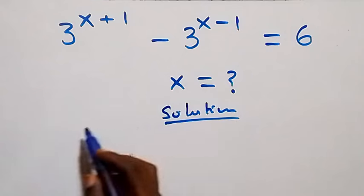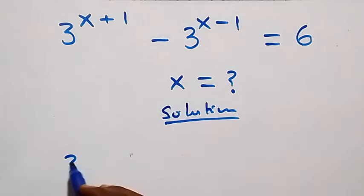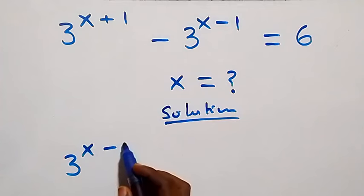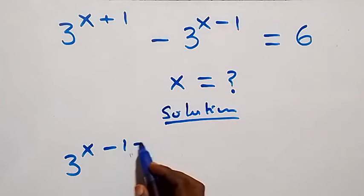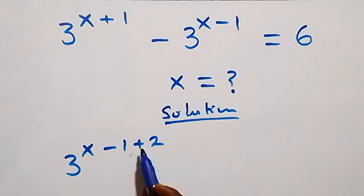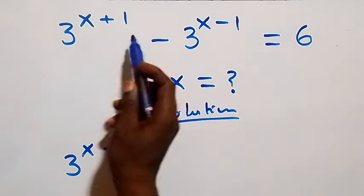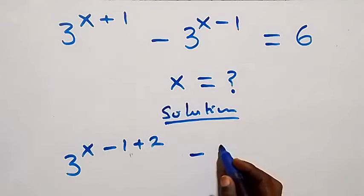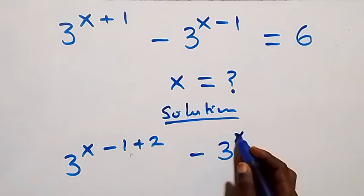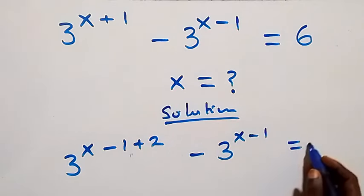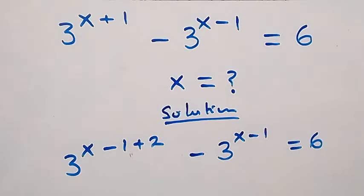Let's write this as 3 raised to power x minus 1 plus 2, which is the same as plus 1 here. Then minus 3 raised to power x minus 1 equals to 6 on this side.